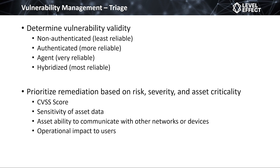With an agent, we can look at the software and say: how are you configured, how do you operate, is there a vulnerability here — without second-guessing through other means. The most reliable approach is the hybridized one, where you get corroboration from non-authenticated, authenticated, and agent-based solutions. That cross-reference of data improves confidence in your vulnerability analysis — if a vulnerability is flagged by all three scanning techniques, it's been validated as legitimate.